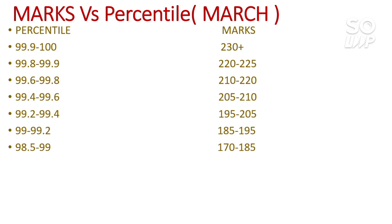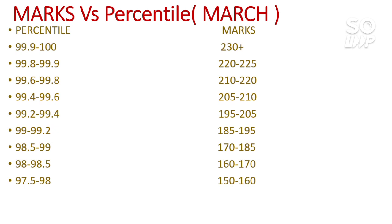For 98 to 98.5 percentile, you need 160 to 170 marks. If you are from the SC category, this range can get you CS in a top 5 NIT, and home-state candidates can get those NITs with lower marks. For 97.5 to 98 percentile, you need 150 to 160 marks — this is the safer score for a general category student targeting any NIT with CS branch.